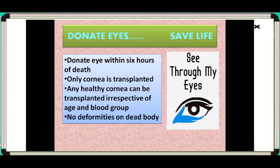How can one donate their eyes? The eyes of a deceased person can be used only if they are removed within six hours of death. When a person who has consented to donate eyes dies, the eyes should be kept wet by sprinkling water on them, or pieces of cotton wool soaked in water should be placed on both eyes so the cornea does not become dry until the eye surgeon arrives. After removal, the eyelids are stitched together with no visible sign of removal. The entire process is completed within 10 to 15 minutes. It is the duty of relatives to inform the nearest eye bank after death.